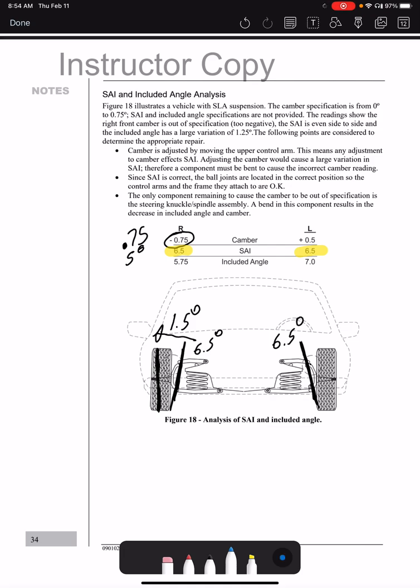But the included angle is off by 1.25 degrees, or just about the same amount that the camber is off, which tells me if the camber is too far in there, but my SAI is correct, I can make the assumption that the spindle here has been bent up.